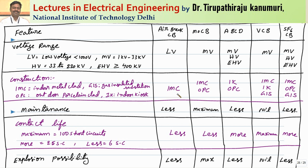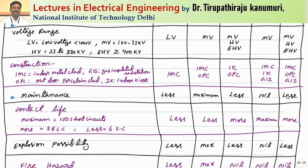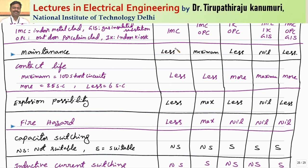Air brake circuit breakers are IMC type for indoor metal clad applications. Minimum oil circuit breakers can be used for either IMC or OPC type applications. Air blast circuit breakers are used for indoor kiosk or outdoor porcelain clad. Vacuum circuit breakers can be IMC, IK, or GIS. SF6 circuit breakers can be IMC, OPC, or GIS. For maintenance: air brake circuit breakers require very little maintenance since no oil or gas tank is needed. Oil circuit breakers require maximum maintenance — you must frequently test the oil, remove carbon deposits, and check the contacts.